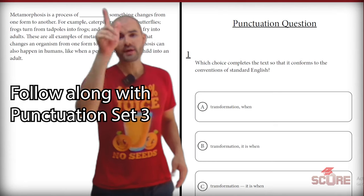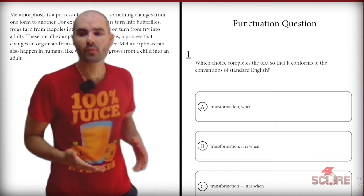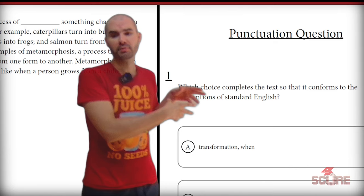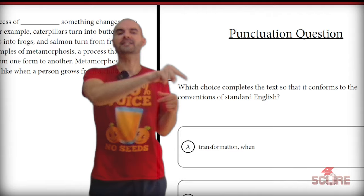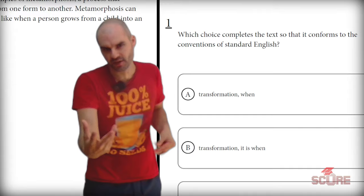All right, we're going to do five punctuation questions in five minutes or less. Let's get started. First of all, we're always going to look at our question and we're going to see the same question that we see on grammar: which choice completes the text so that it conforms to the conventions of standard English. Anytime I see that phrase, I need to take a look at the answer choices. And if I see that the punctuation is the thing that's changing, I'm dealing with a punctuation question.